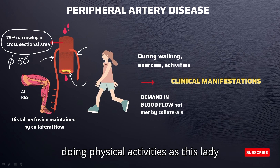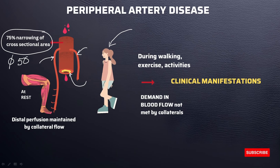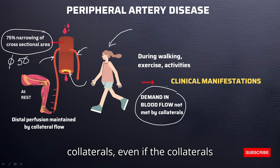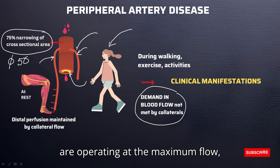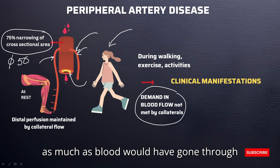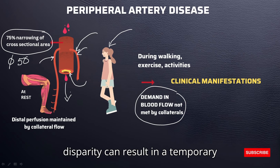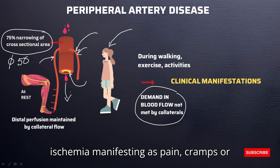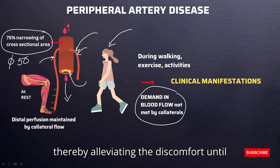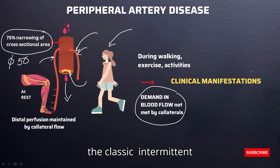During physical activities such as exercise, there is an increased demand for oxygen-rich blood which often exceeds the supply. The demand in blood flow is not met by the collaterals, even if they are operating at maximum flow — collaterals cannot deliver as much blood as would have gone through the blocked area. This disparity results in temporary ischemia, manifesting as pain, cramps, or fatigue in the muscles, prompting patients to slow down, thereby alleviating the discomfort until blood flow stabilizes. This leads to the classic intermittent claudication.